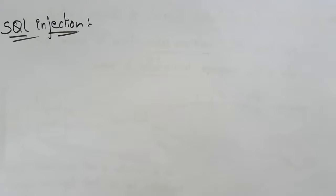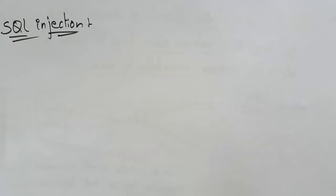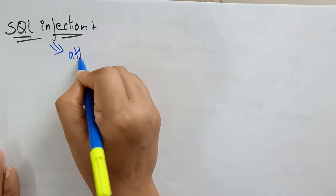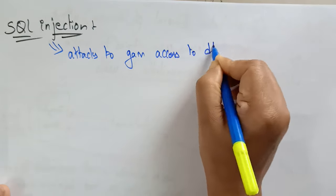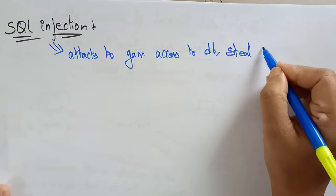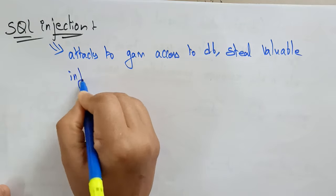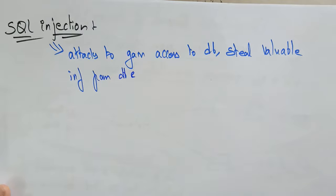Injection means the attacker is trying to insert something so that he can damage the database. SQL means it is relating to the database. So injection means the attacker is trying to enter some code — inserting code into the web server so that the data can be manipulated. The attacker gains access to the database through SQL injection attacks to steal valuable information.